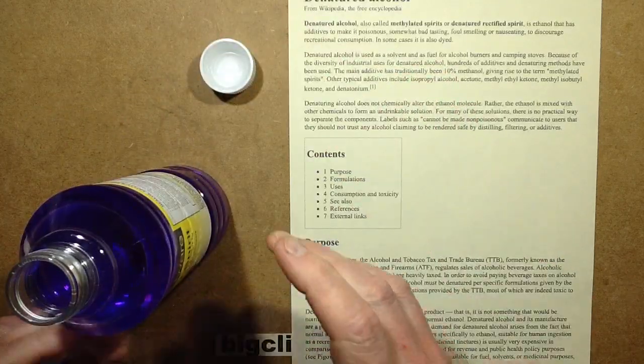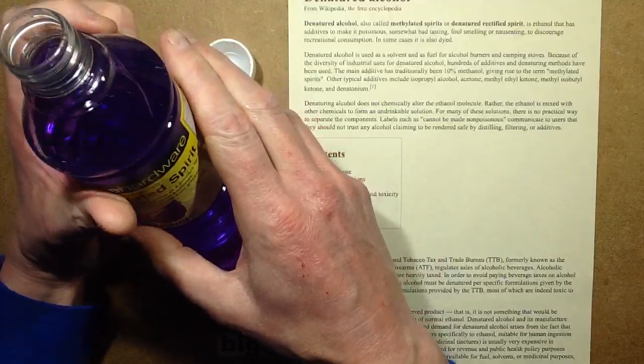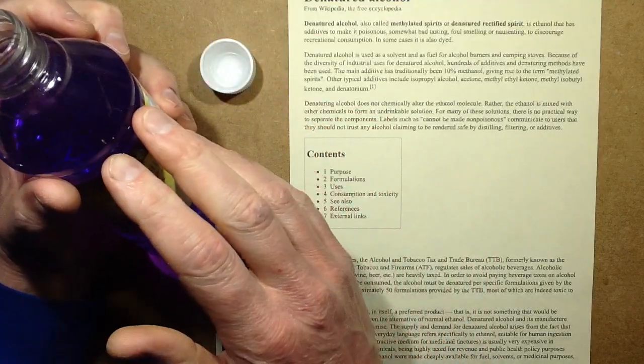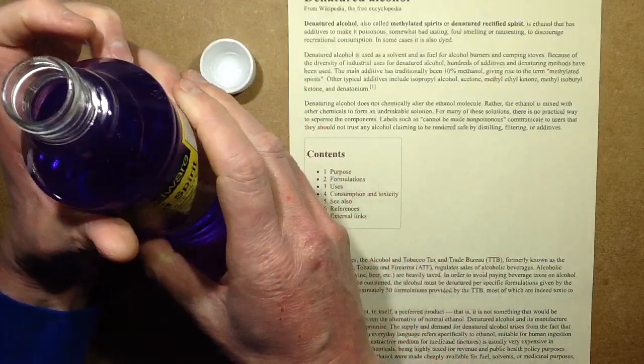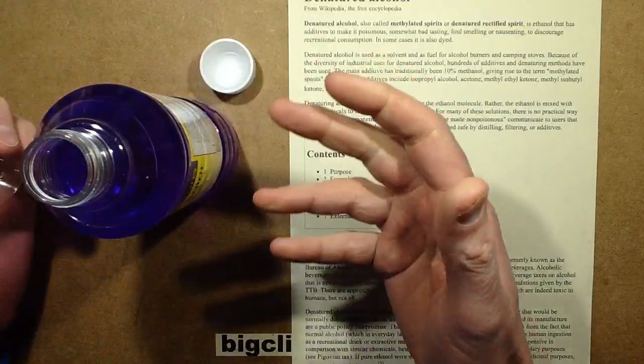Do not try this yourself. The mechanism of methanol poisoning, because there is methanol in this, is that it converts to an acid in your bloodstream that attacks optic nerves and makes you go blind.